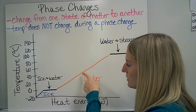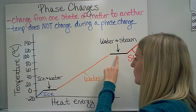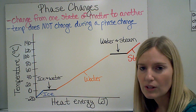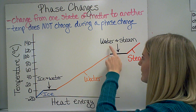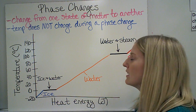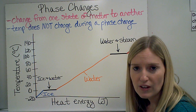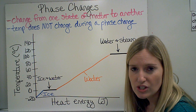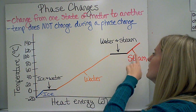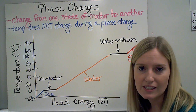But once it reaches 100 degrees, it's going to start turning into steam or gaseous water. As it's going through the phase change, the temperature stays the same. Once it all becomes steam, then the temperature can start rising again.